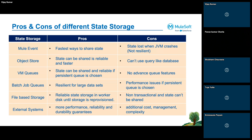Third option is VM queues. VM queues are reliable, but slower than Mule event and object store. We generally use them for a single application — when we have multiple flows and want to share state from one flow to another. Performance-wise it is reliable and we can share state. The con is it doesn't have advanced features like JMS, Apache queues, or Anypoint MQ. VM queues can also be used for distributing load when doing horizontal scaling with multiple workers.